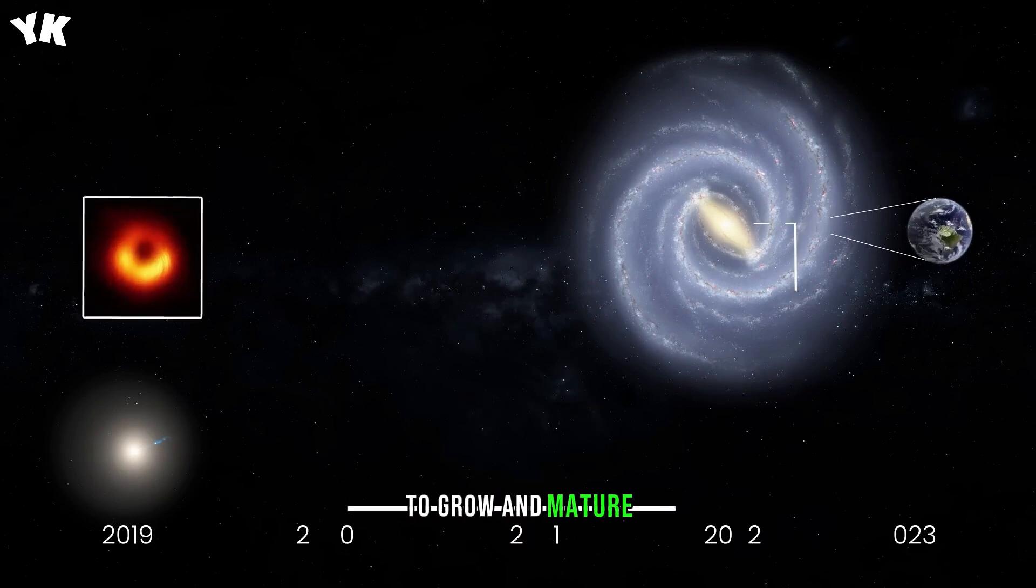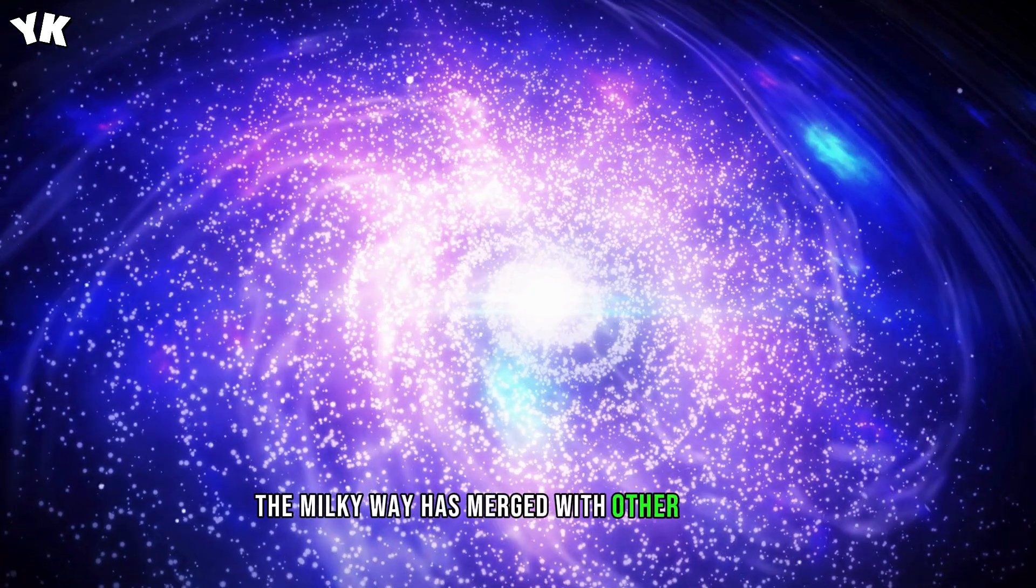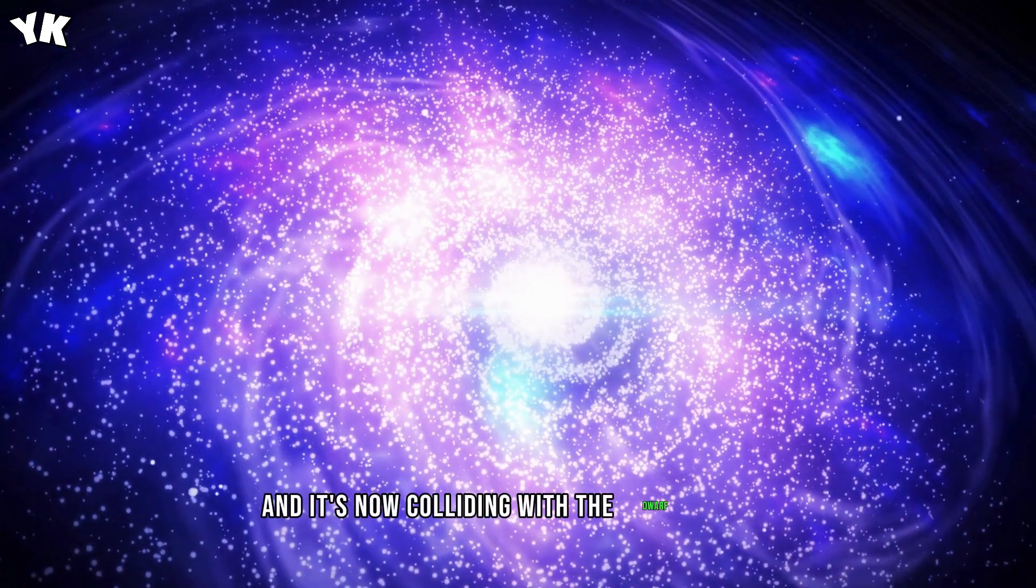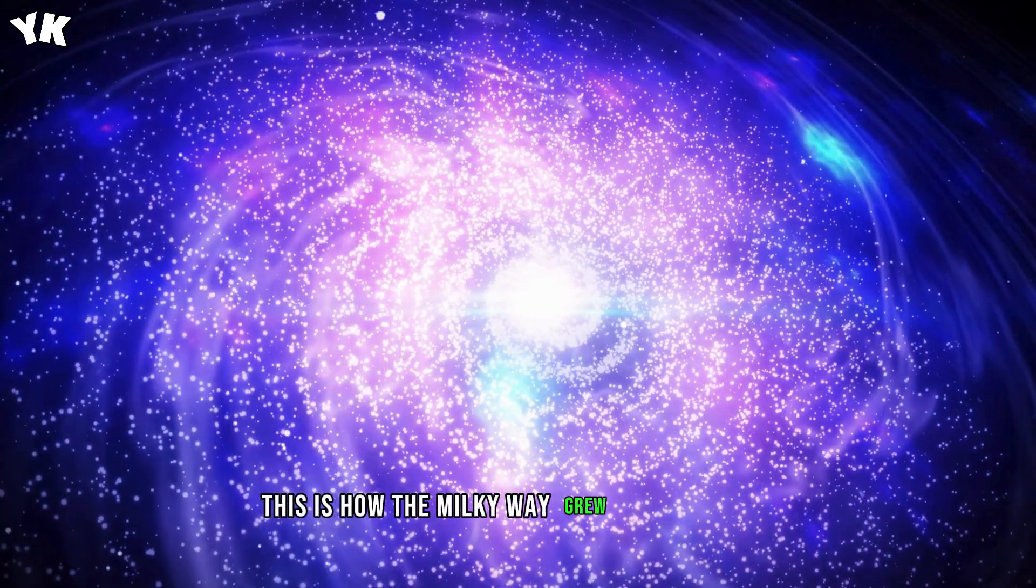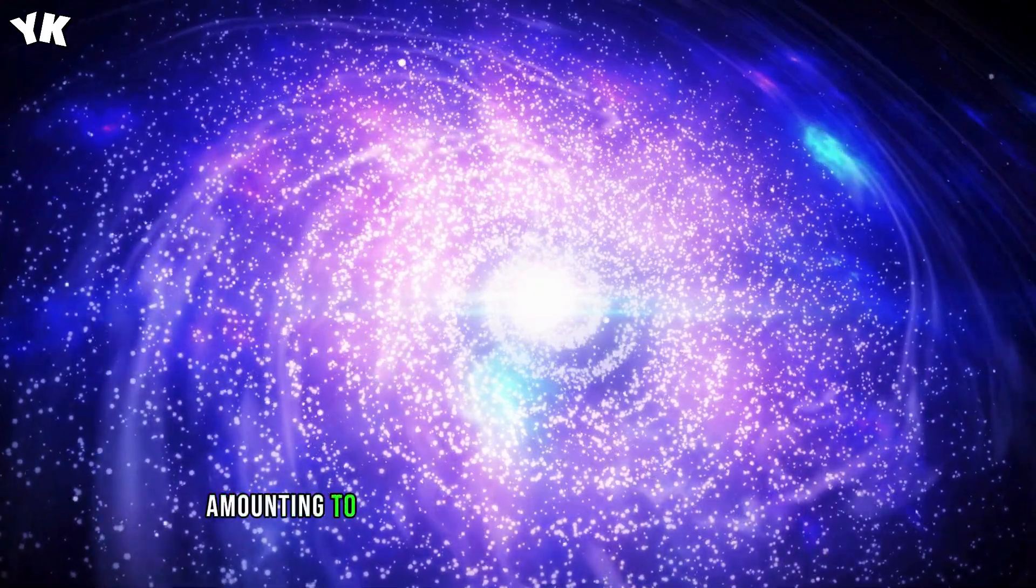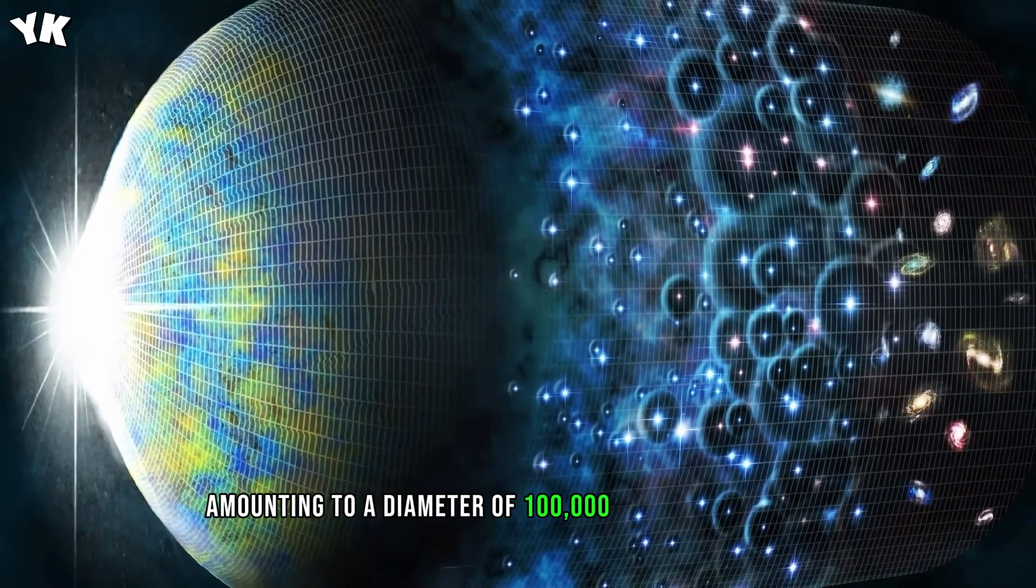To grow and mature, the Milky Way has merged with other galaxies, and it's now colliding with the dwarf galaxy Canis Major. This is how the Milky Way grew to a huge size, amounting to a diameter of 100,000 light-years across.